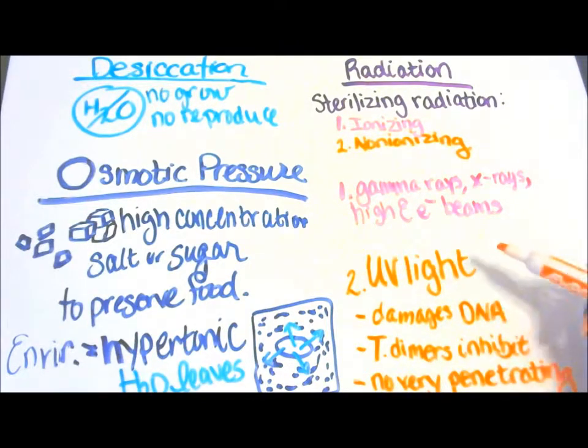Now UV light can damage the DNA by forming bonds between adjacent pyrimidine bases. Two thymine bases inhibit the DNA correction during replication and they're not very penetrating.